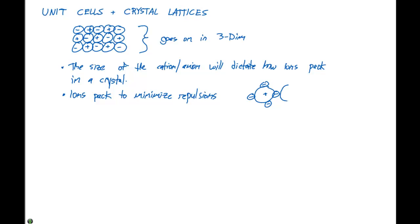So if there's gonna be another cation, we're gonna have an anion right in between those, because like charges repel and opposite charges attract. So if we have large positive charges, that means we're gonna need a bunch of negatives to surround that positive charge in order to minimize the repulsions.